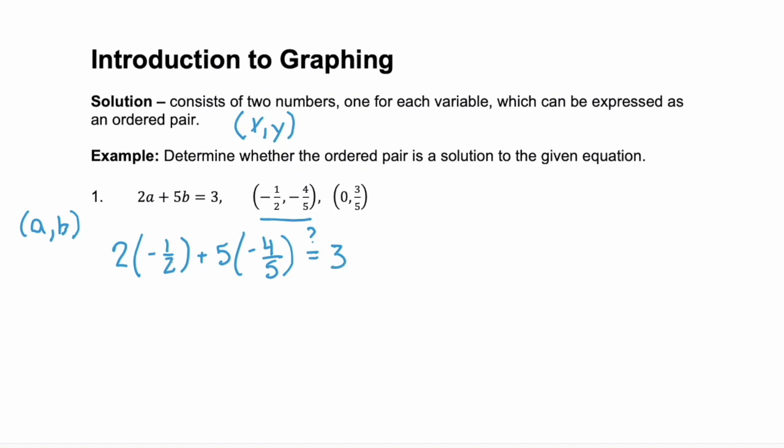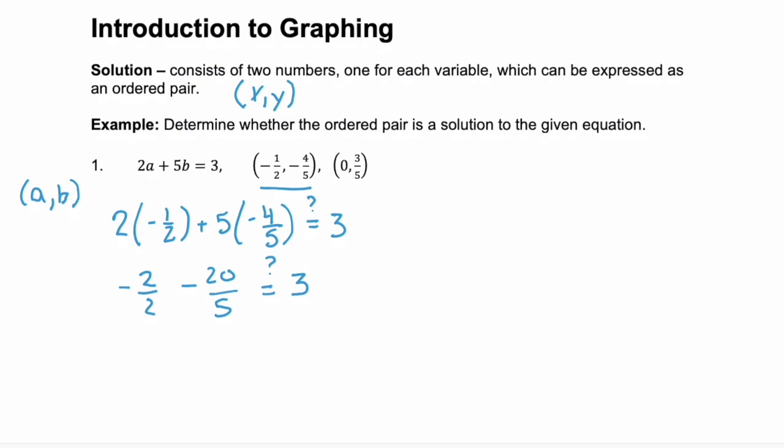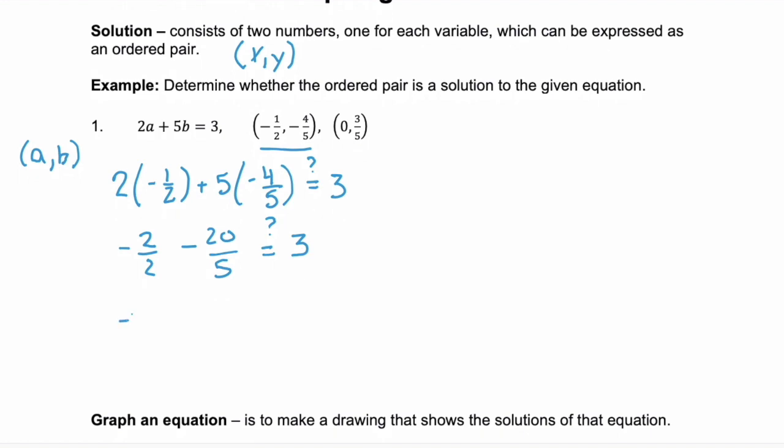Two times negative one-half is negative two over two. And five times negative four-fifths is negative twenty over five. And again, we're still simplifying to see if it's equal to three. Well, negative two over two, that simplifies for us to negative one. And twenty over five, well, this is negative four.